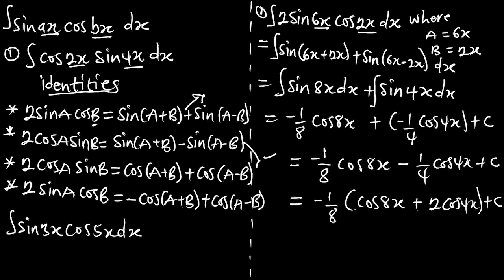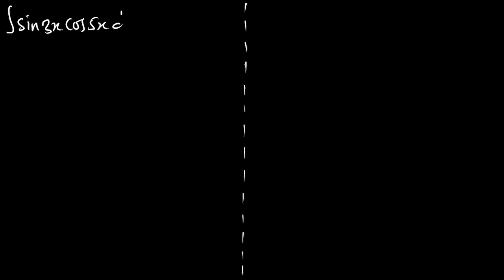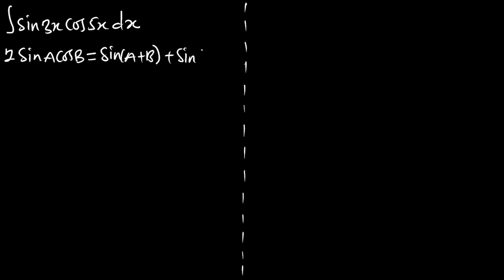This is the final answer for that integral. The key is to get the identities in mind so you can replace the expression with the right identity. Now let's look at example two: find the integral of sin(3x) cos(5x) dx. From the identities, this is similar to the identity: 2 sin(A) cos(B) = sin(A+B) + sin(A-B).